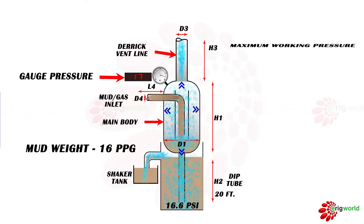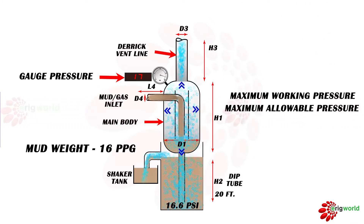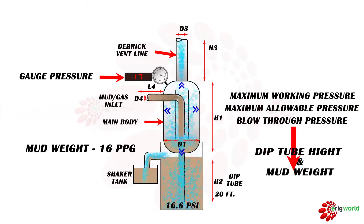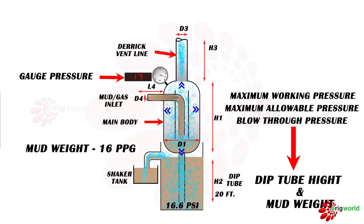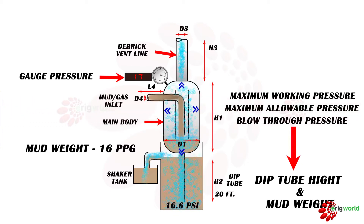This means that the working pressure, maximum allowable pressure, and blow-through pressure depend on the hydrostatic pressure in the deep tube. The hydrostatic pressure depends on the height of the deep tube and the mud weight. In summary, gauge pressure depends on the ID and height of the vent line, whereas the working pressure, maximum allowable pressure, or blow-through pressure depends on the deep tube height and the hydrostatic pressure of the deep tube.